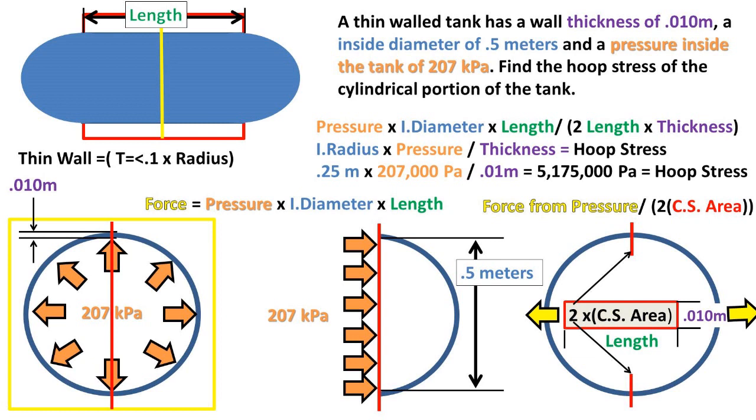After plugging our equation into our calculator, we get a hoop stress of 5,175,000 pascals, or newtons per meter squared.